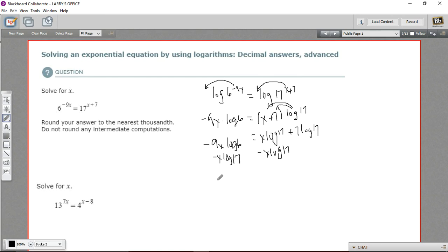When I do that, over here I'm going to get a negative x times the log of 17, minus 9x times the log of 6, equals, and over here I'll just get these two add up to zero. I'll just get 7 times the log of 17.